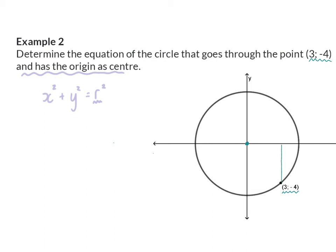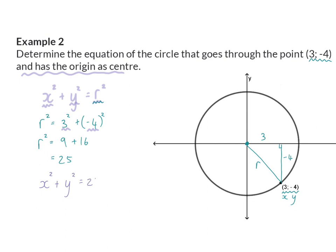We can draw a 90-degree triangle, and with the coordinate (3, −4), we label the sides as 3 and −4. Using the theorem of Pythagoras — or equivalently substituting x and y into the standard form — r squared equals 3 squared plus (−4) squared, which is 9 plus 16, so r squared equals 25. Even though we could calculate the radius as 5, it is not necessary, since our equation uses r squared. So our final equation is x squared plus y squared equals 25.